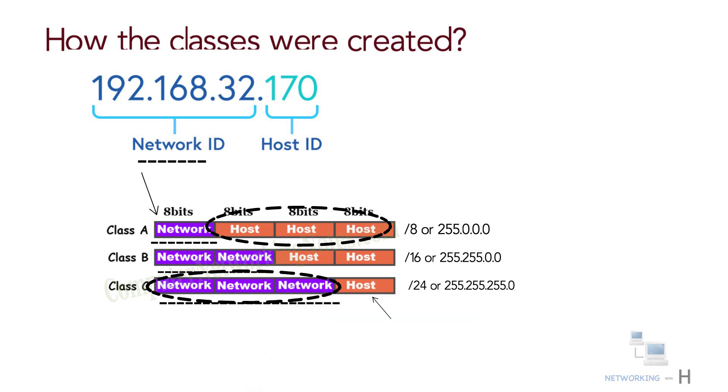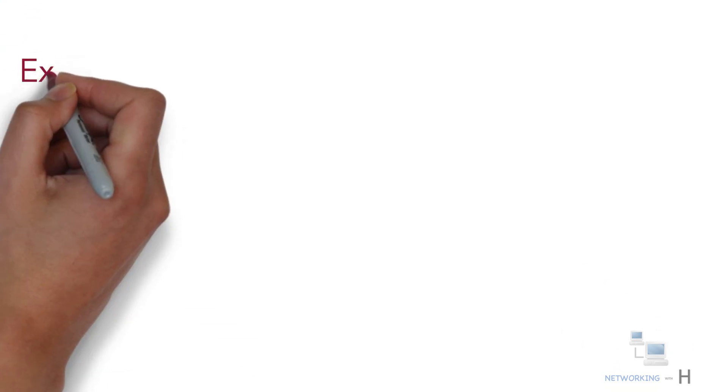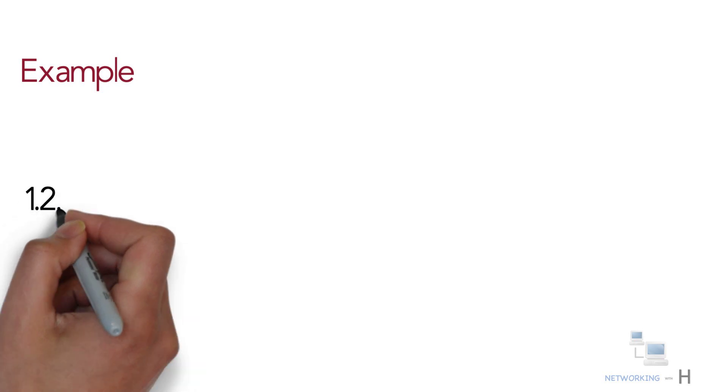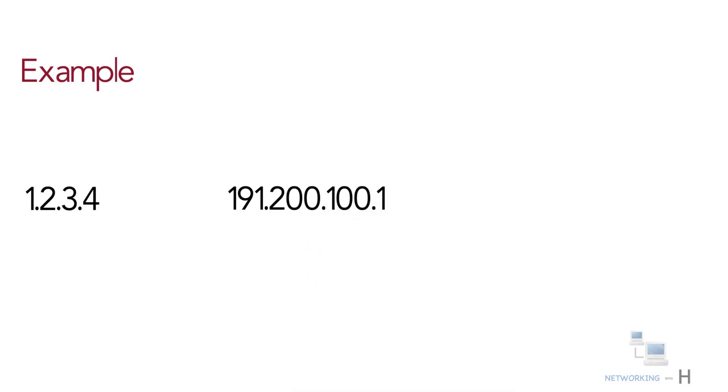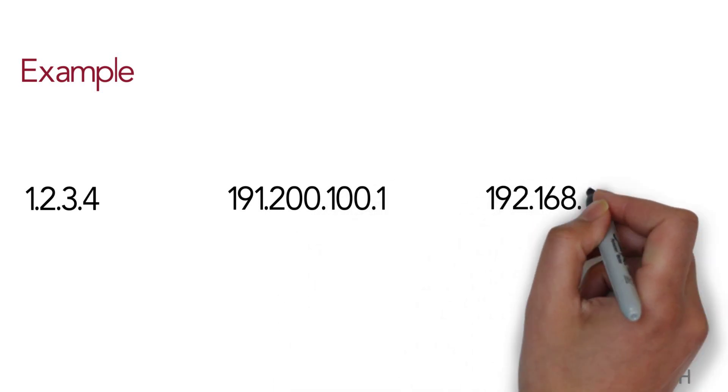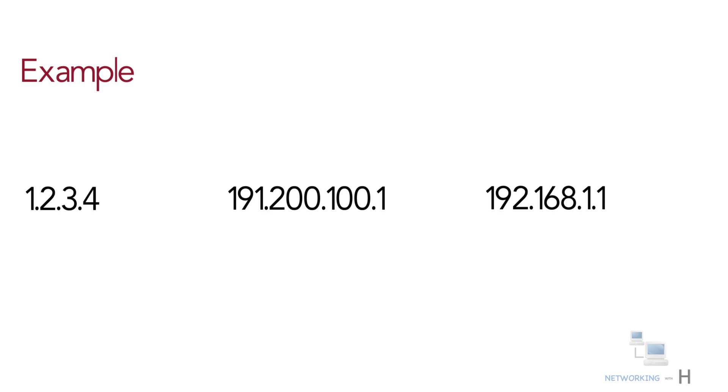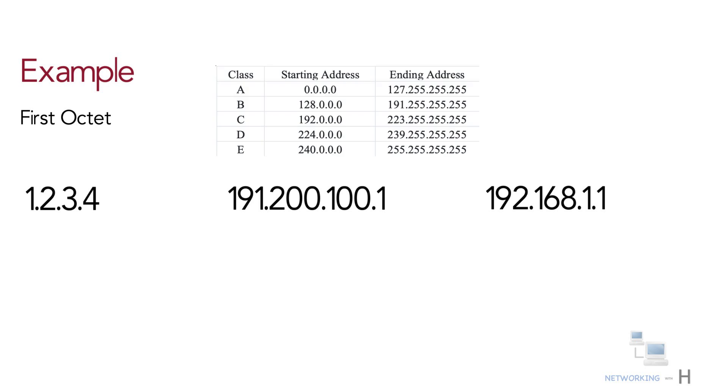Let's use an example to find the class of three different IP addresses: 1.2.3.4, 191.200.100.1, and 192.168.1.1. To find the class of an IP address, simply pay attention to the first octet. Let's start with 1.2.3.4.